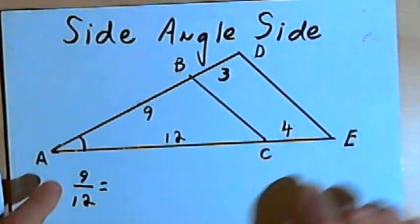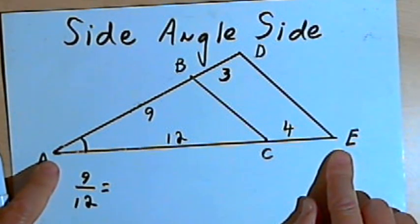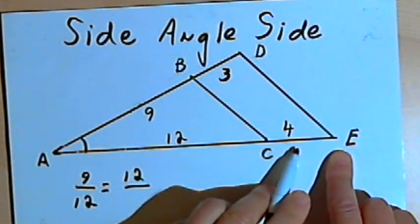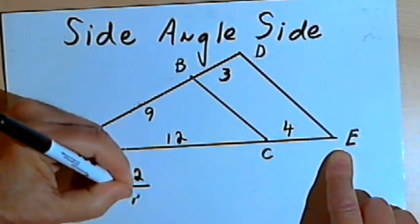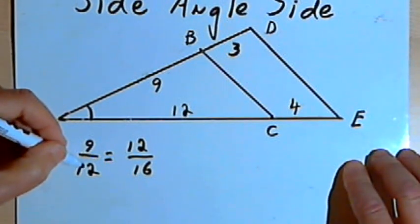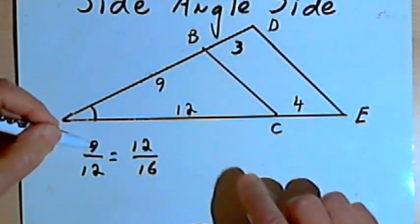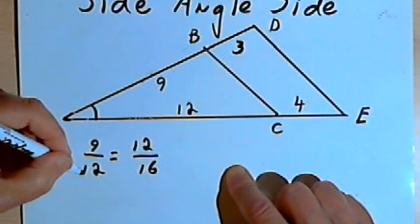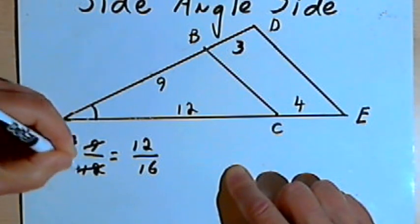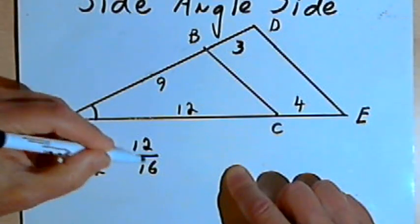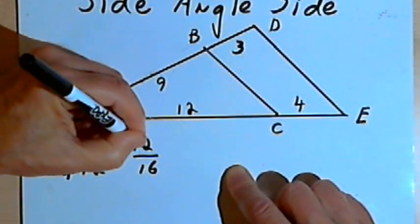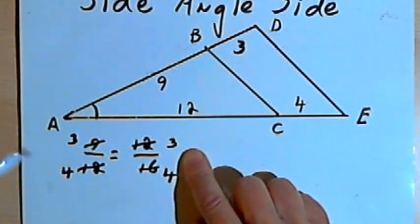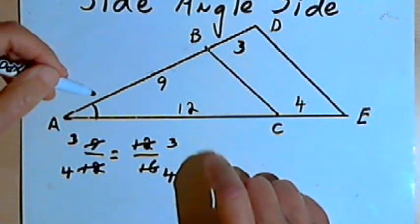Now I'll take the other pair of corresponding sides: AC and AE. The ratio is 12 over 16, since AC is 12 and AE is 12 plus 4. I want to see if 9 over 12 equals 12 over 16. Reducing 9 over 12 by dividing by 3 gives 3 over 4. Reducing 12 over 16 by dividing by 4 also gives 3 over 4. Both ratios reduce to 3 over 4, so the sides are proportional.